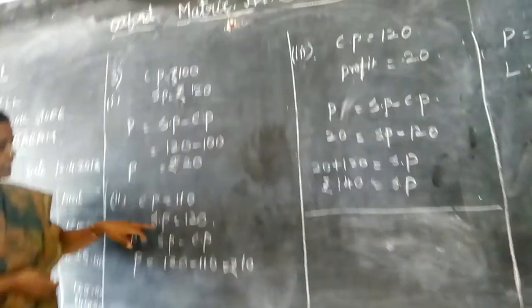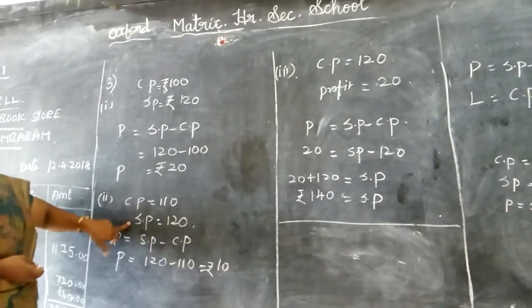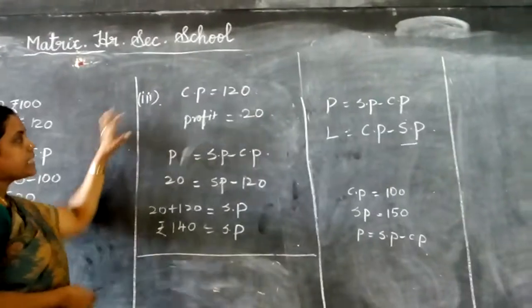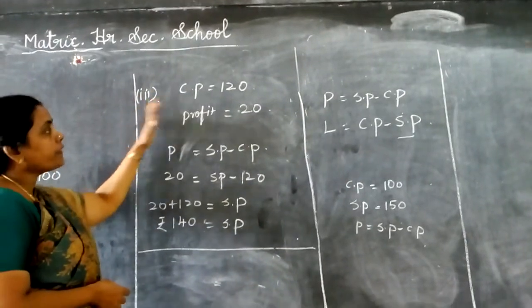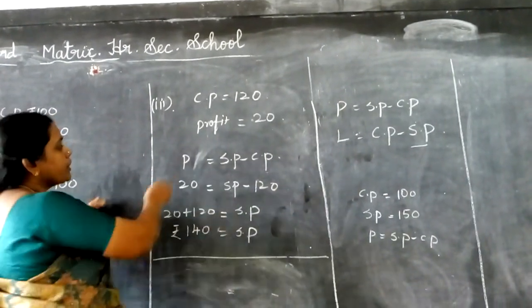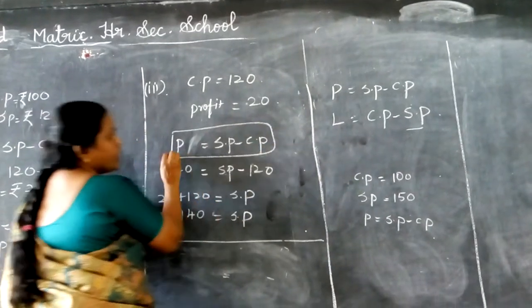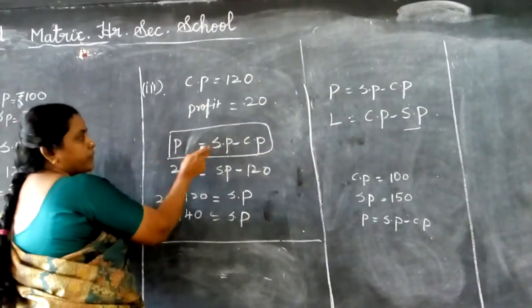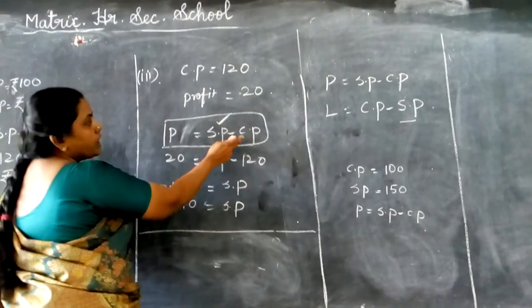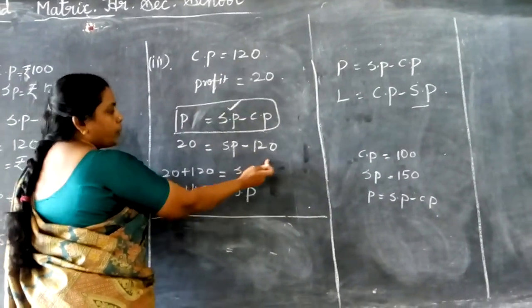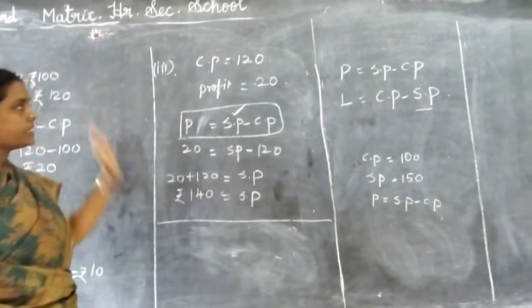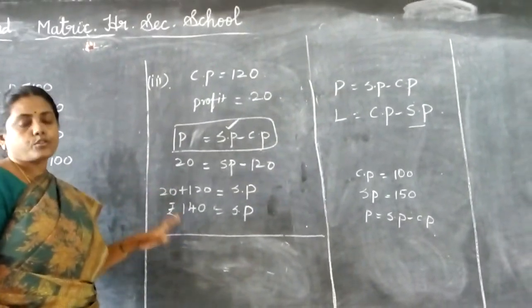Now second question, CP is given, SP is given. By seeing itself we can tell whether it is a profit or loss. SP is more automatically profit. So SP minus CP which is 10. In the same way, third question is CP is equal to 120, profit is given 20. Now we are going to find out what is SP. Profit is equal to SP minus CP. We know the CP value is there and profit is there. So profit, substitute 20, SP we are going to find out. Cost price is given here 120. So 120 will come to this side. So 20 plus 120 is 140. So SP is equal to 140 rupees. In this way only we have to find out the other sums also in the formula.